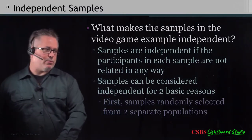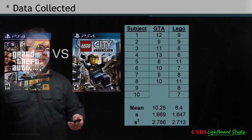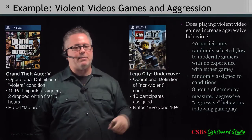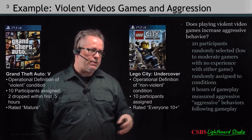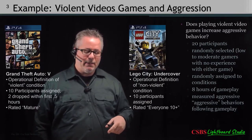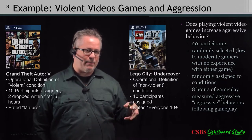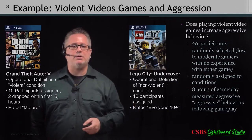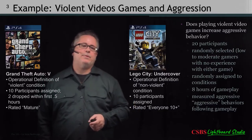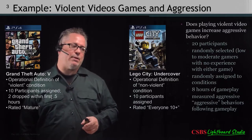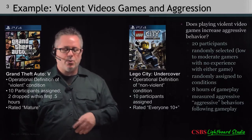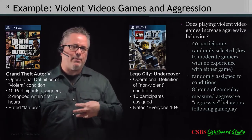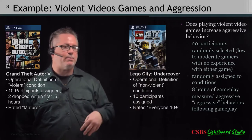What makes the samples in this video game example independent? The 20 participants were randomly selected from the population. Random selection doesn't address independence directly — it more addresses our ability to infer back to the population. If we collect people randomly from a population, whatever we find about them makes it easier for us to infer that information back to the population they came from because we chose them randomly.